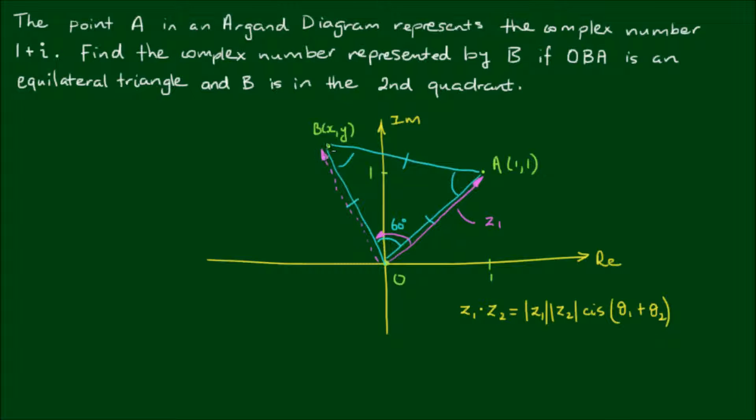Now, since point B must have the same distance from the origin as point A, this vector here must have the same modulus as Z1. So to preserve the modulus of this vector, I would make the mod of Z2 equal to 1. And then to rotate this vector by 60 degrees, I would make the argument of the rotation vector equal to 60 degrees.